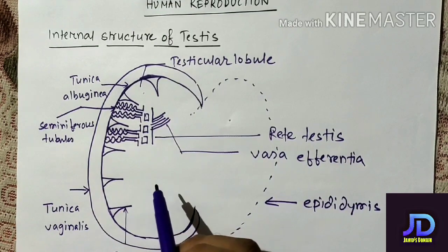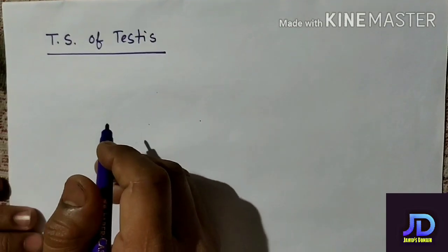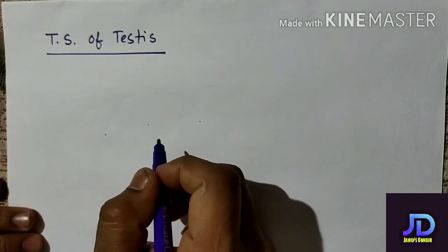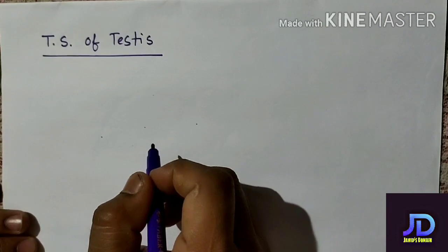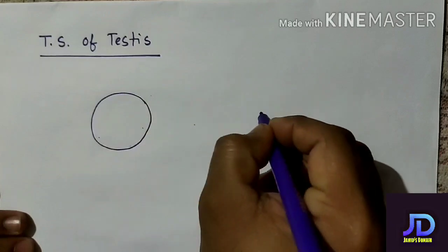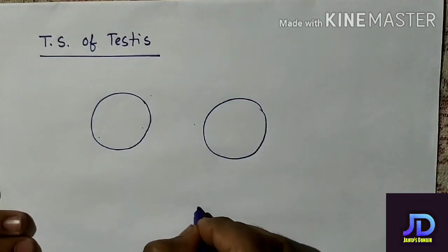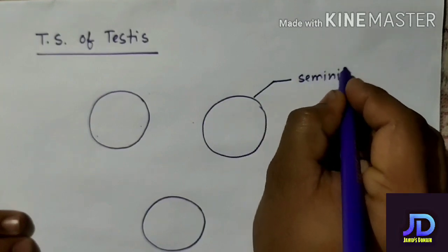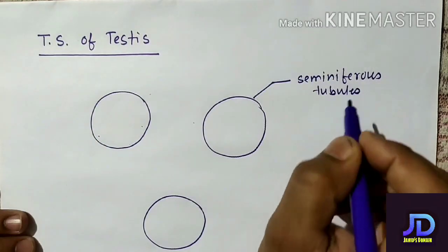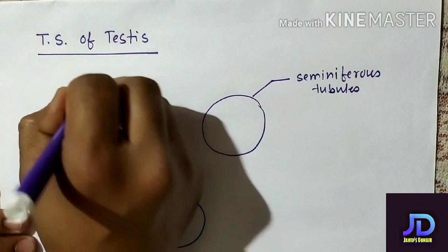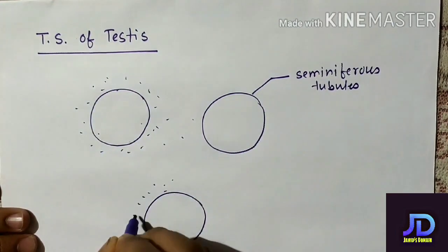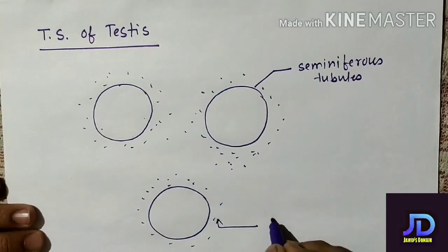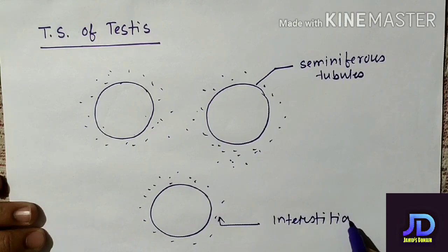Now let's discuss the transverse section (TS) of testis. If we make a section of testis, we will find that the seminiferous tubules are scattered in a connective tissue. These seminiferous tubules are scattered in a connective tissue known as interstitial connective tissue.